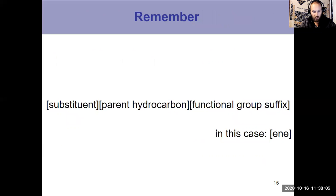But if you're in doubt, just remember the general formula. We got this in chapter three, here it is again in chapter five. Your parent hydrocarbon in the middle, your functional group suffix at the end. In this case, we're using E-N-E for alkenes and your substituents with their numbers at the beginning. So that's the nomenclature.